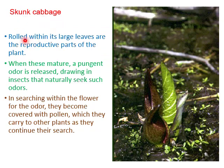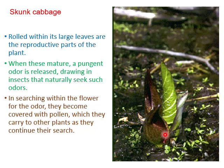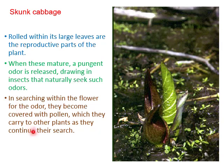Skunk cabbage: rolled within its large leaves are the reproductive parts of the plant. When these mature, a pungent odor is released, drawing insects that naturally seek such odors. In searching within the flower for the odor, they become covered with pollen, which they carry to other plants as they continue their search.